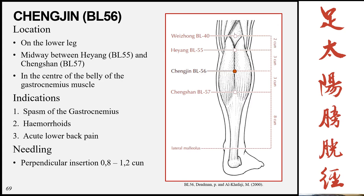The next point is Chengjin, Bladder 56, located on the lower leg midway between Heyang, Bladder 55, and Chengshan, Bladder 57, in the center of the belly of the gastrocnemius muscle. Indications include the local function of spasm of the gastrocnemius, and because of the meridian pathway it can also treat hemorrhoids and acute lower back pain. Insertion is perpendicular 0.8 to 1.2 cun.